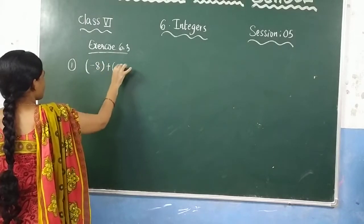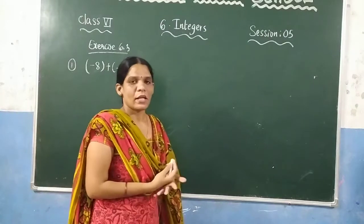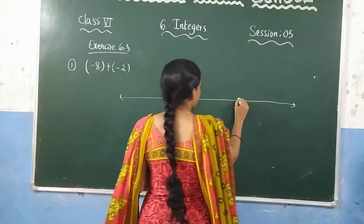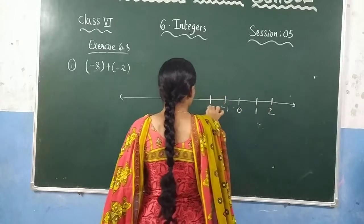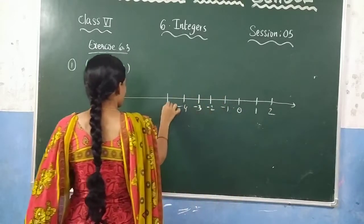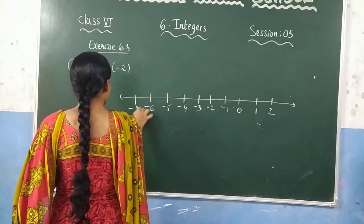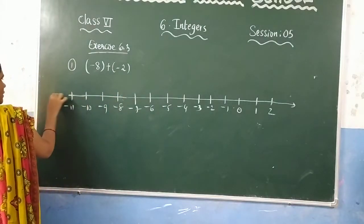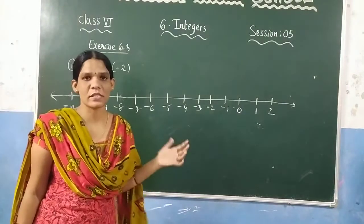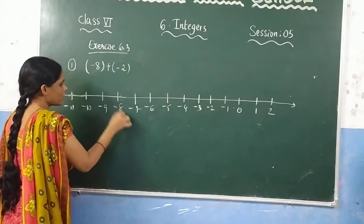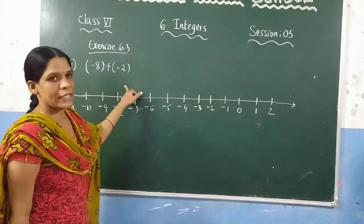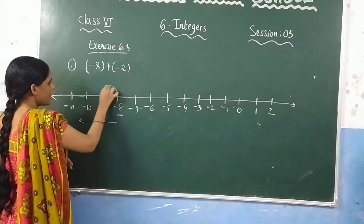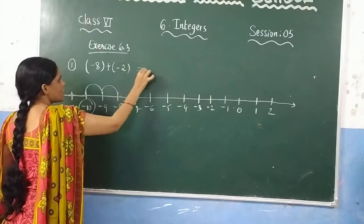The next problem is negative 8 plus negative 2. Draw the number line and mark: 0, 1, 2, minus 1, minus 2, minus 3, minus 4, minus 5, minus 6, minus 7, minus 8, minus 9, minus 10. The first number is minus 8, so go to minus 8. We are adding a negative number, so move left. Move 2 steps: 1, 2. The answer is minus 10.